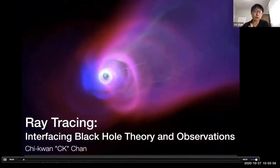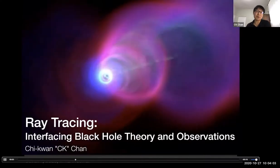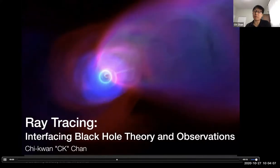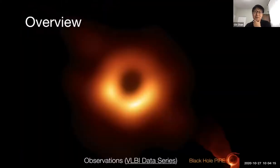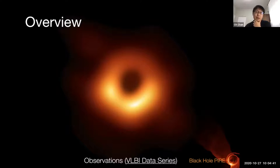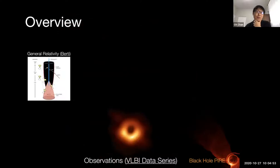Today's topic is ray tracing — a relatively simple problem but very important because it's at the interface of theory and observation. Everyone here has seen the image of M87 from the Event Horizon Telescope. Getting the image is only the first step in our science; we really want to learn something about gravity, astrophysics, and black holes.